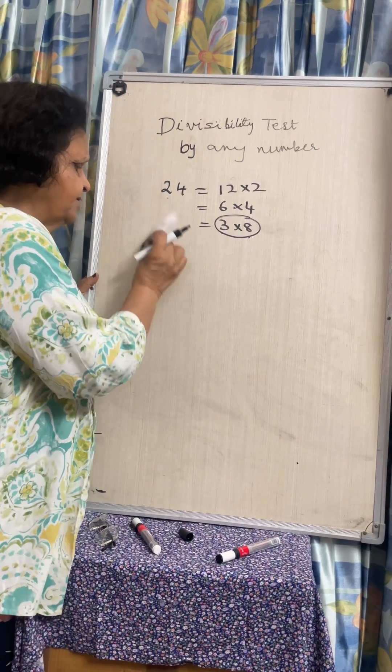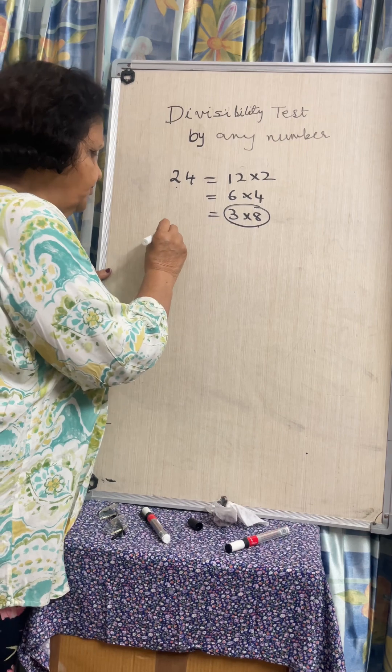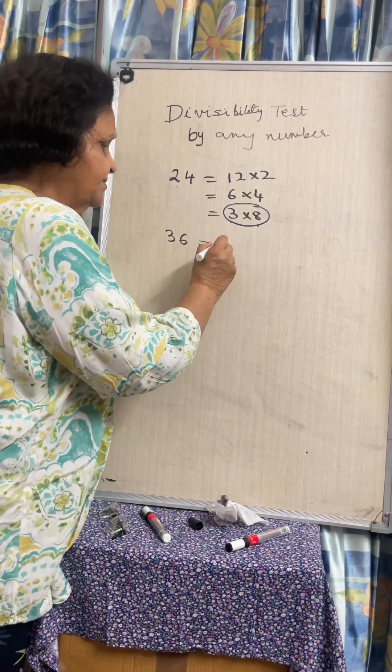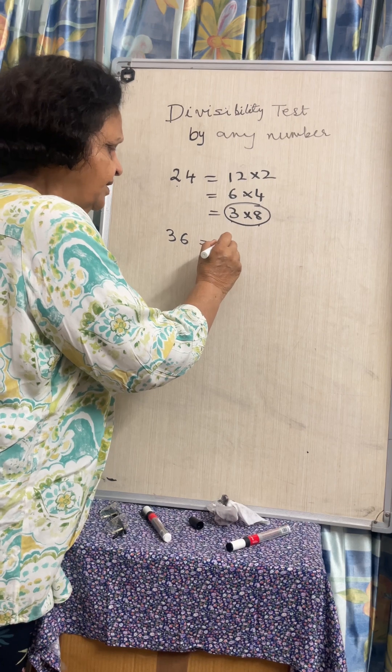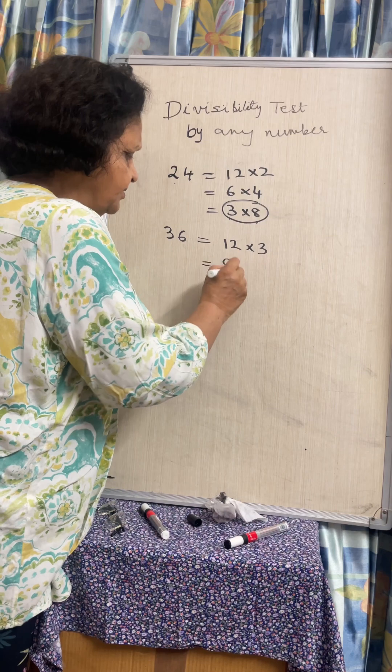So what is the general result that we have? Now let me show you another one. Supposing we take 36. For 36, let us make factors. There are 12 3s are 36, 9 4s are 36.